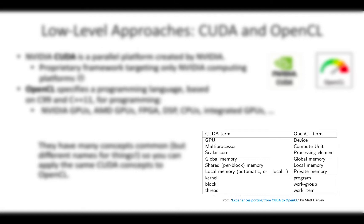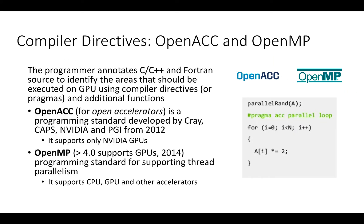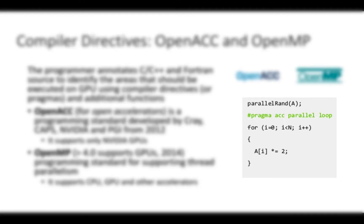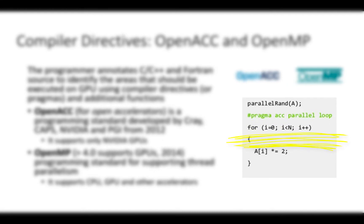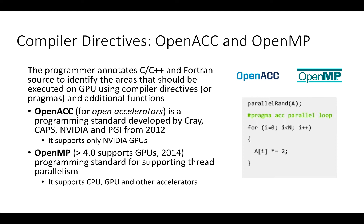Here you can see a table with some translation from CUDA terms to OpenCL terms. In the compiler directive approach, the programmer introduces annotations in the code — called compiler directives or pragmas — to tell the compiler which part of the code should be executed on the GPU. You can see an example in the code on the right part of the slides. We add a compiler directive using the pound symbol, telling the compiler to divide different parts of the loop among threads and run them on the GPU. The two main compiler directive approaches are OpenACC and OpenMP. I'm not really a big fan of this — it feels like GPU programming for dummies — though I have published a few papers on OpenACC performance.